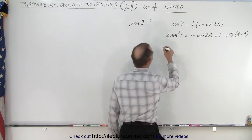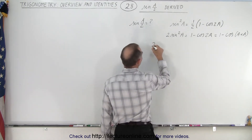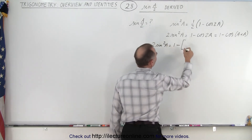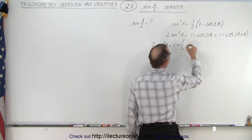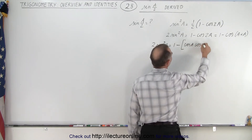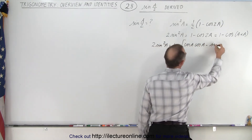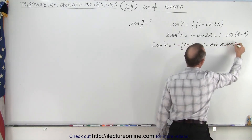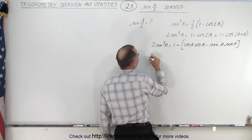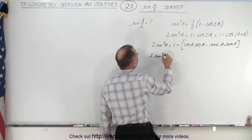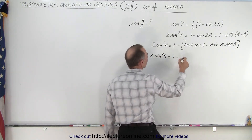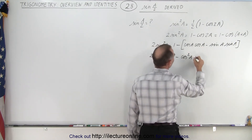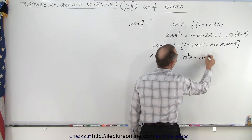And that can be rewritten as follows. Two times the sine squared of A is equal to one minus the cosine of A plus A, which would be equal to cosine A times cosine A, minus sine A times sine A. Or equivalently, this can be written as two times the sine squared of A equals one minus the cosine squared of A, and minus times minus which is plus the sine squared of A.